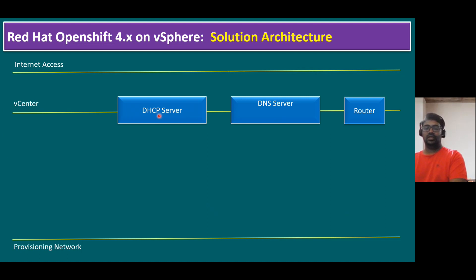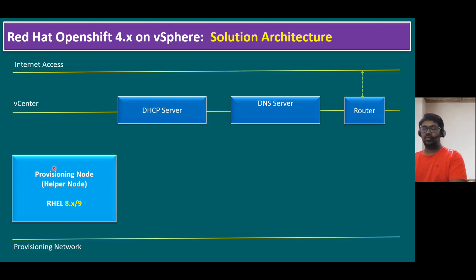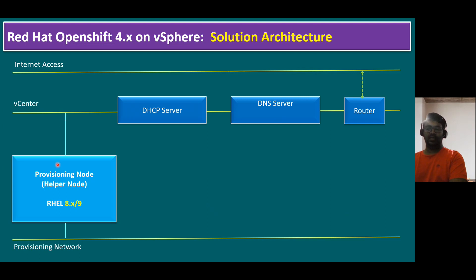Another component is a router, which can be either a physical or software router — it must have access to the internet. Another key component is a helper node, also called a provisioning node. Red Hat recommends configuring it with either Red Hat Enterprise Linux 8-series or 9-series OS, though third-party Linux is also acceptable. This provisioning node is used to start deploying the OpenShift cluster, and it must have connectivity and a trust relationship with the vCenter server, as well as connectivity to the provisioning network.